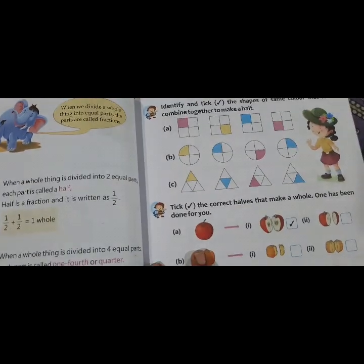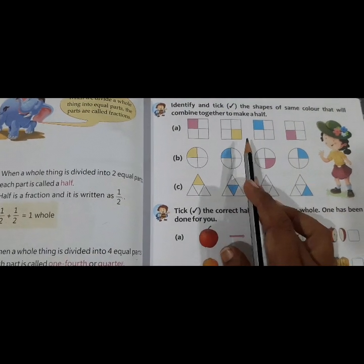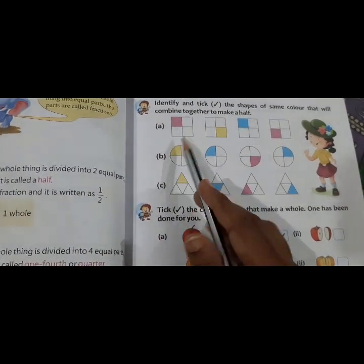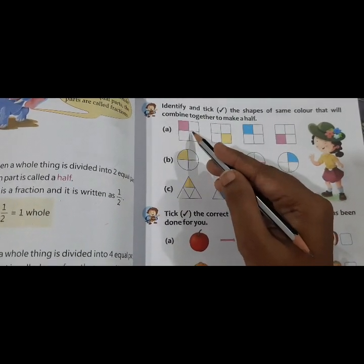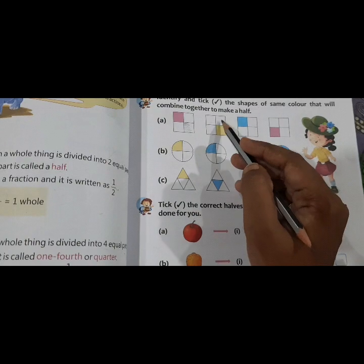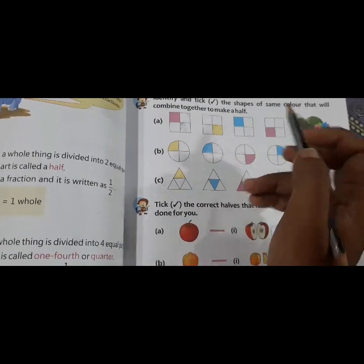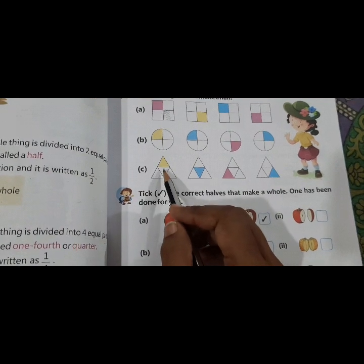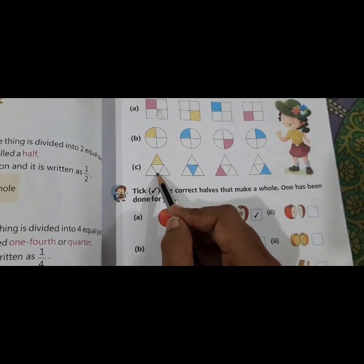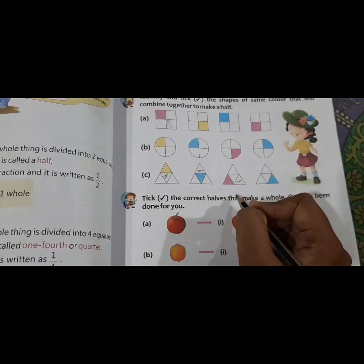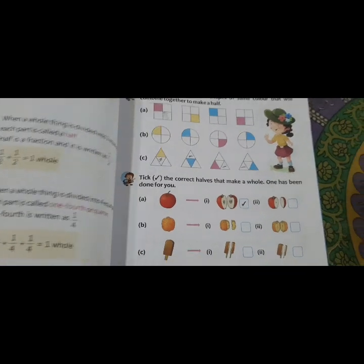Now, move forward with page number 97. Identify and take the shape of same color that will combine together to make a half. Now, pink color. We have to make a half. So in any of these three boxes, we have to color with the pink, shaded the pink color over here. Yellow color anywhere you can color the yellow, blue and pink. Likewise. Suppose this is a four part circle and triangle. One, two, three, four. So over here you can color the things yellow. Then over here you can color the blue color. Likewise, you have to do.